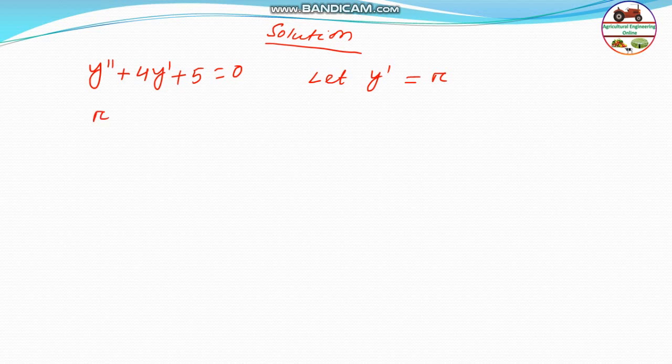That means, if y dash is r, then y double dash will be equal to r squared. So double derivation gives us r squared. Therefore, the equation becomes r squared plus 4r plus 5 is equal to 0.